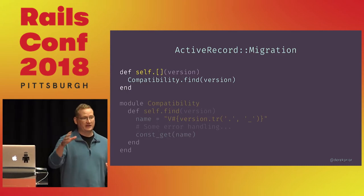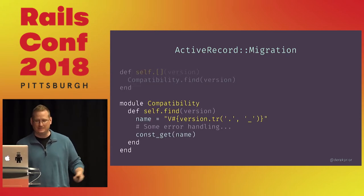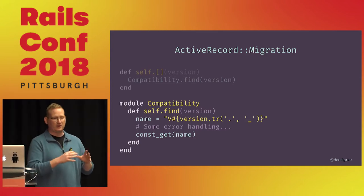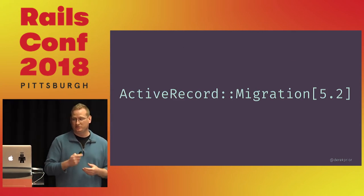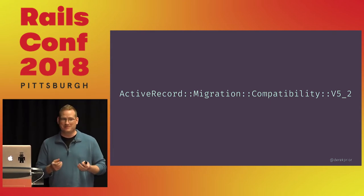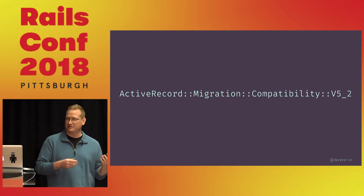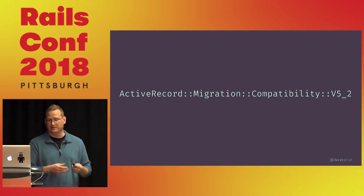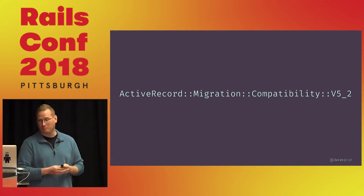The way to answer that is to crack open the migration class itself, and we can see that it defines the brackets method. So we're not actually indexing into an array — we're calling this method with the version that we passed to it. That method hands off to compatibility.find, and that compatibility.find call isn't an ActiveRecord.find call; rather, it's a call to the compatibility module method find. What that does is take the version you pass in, turn it into a string, do a little bit of error handling, and then spit out a constant. So basically, it's a way to turn this here into this much longer form.